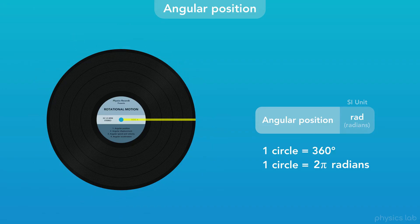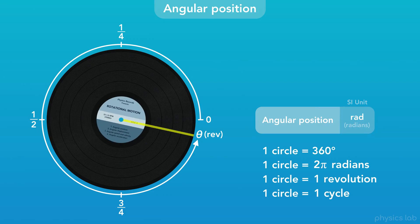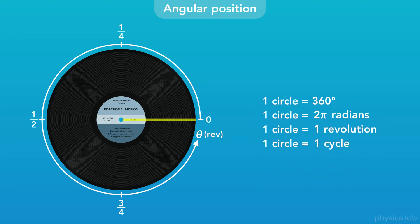We can also describe the angular position in terms of revolutions or cycles. If an object rotates all the way around, that's one revolution or one cycle, and we can label the axis using fractions. So those are the units we use to describe angular position, and we can use those relationships if we need to convert between different units.